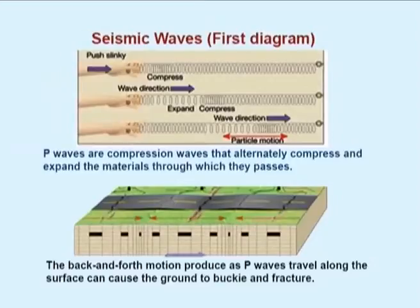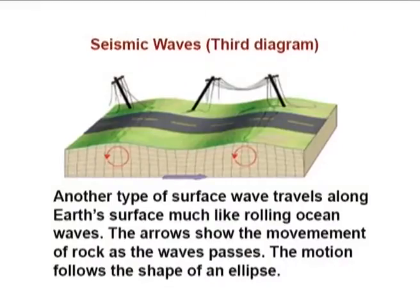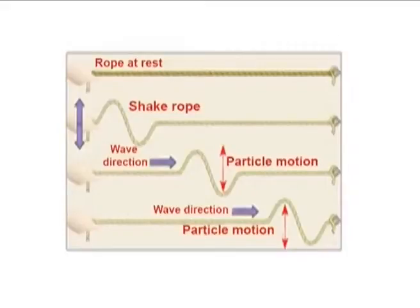There are three types of waves: primary waves, secondary waves, and L waves. P waves are formed during back and forth motions and can cause the ground to buckle and fracture. In the second diagram, the ground shakes up and down, and the S waves travel more. In the third diagram, this is another type of surface wave travelling along the surface much like rolling ocean waves, where the motion follows the shape of an ellipse. That is how seismic waves act during earthquake times.